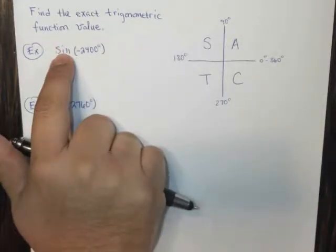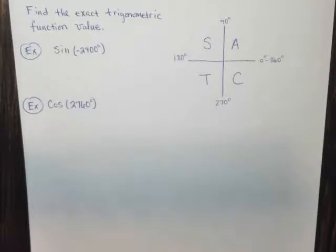The first one is the sine of negative 2400 degrees. So this one is a really nice problem, because what we first must do is we need to find what's called a coterminal angle. So what is a coterminal?